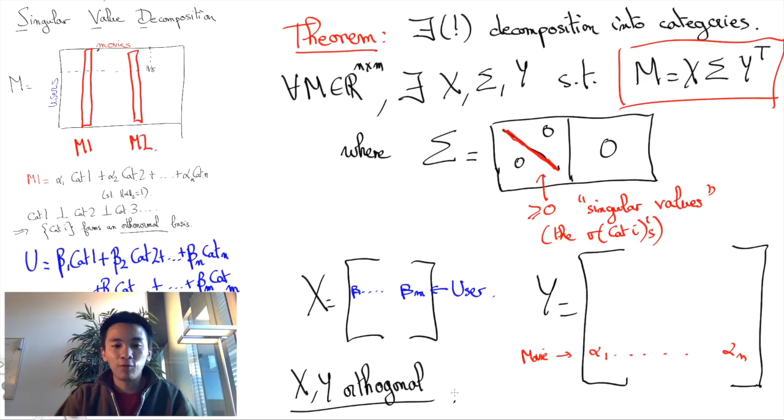Now one cool thing about SVD is that, up to some technicalities, SVD is unique. More precisely, if we demand the diagonal matrix to order its diagonal entries in a descending order, then all SVDs must yield the same diagonal matrix Sigma.